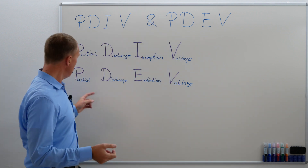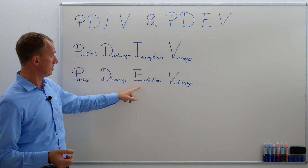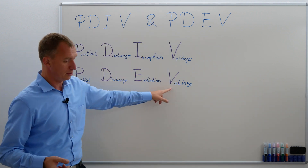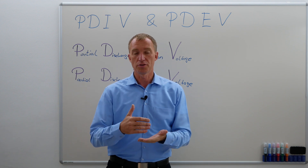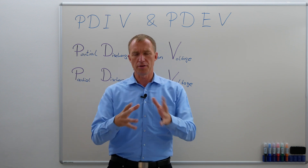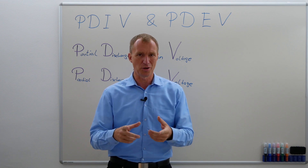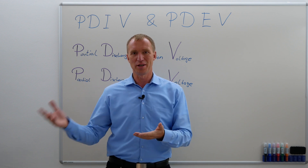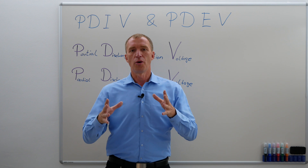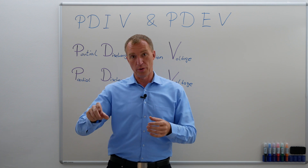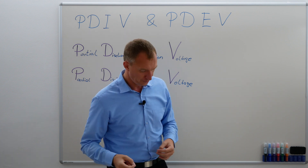And the PDEV, the Partial Discharge Extinction Voltage, is the voltage level where it stops. Extinction voltage doesn't mean when it starts to become a flashover, but it means if you turn down the voltage again, at what voltage level does it stop?